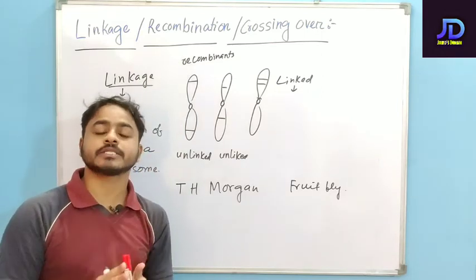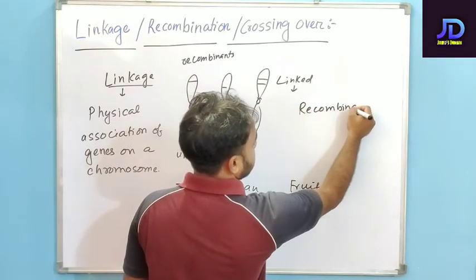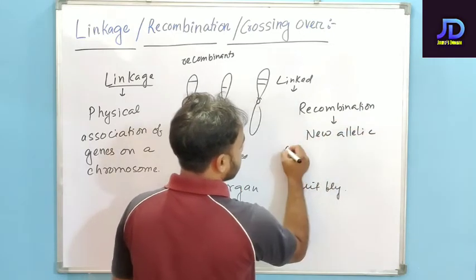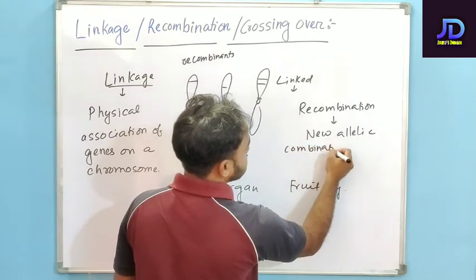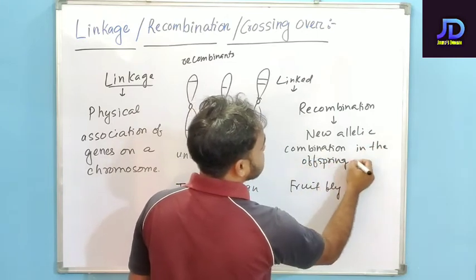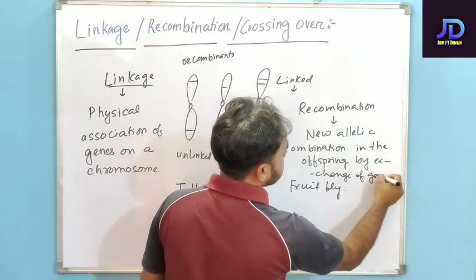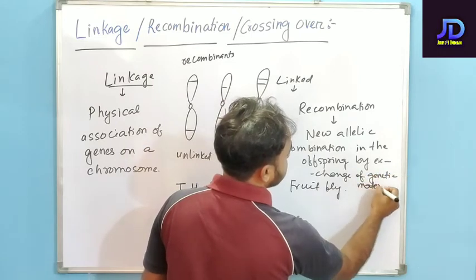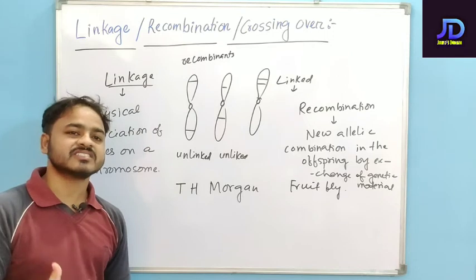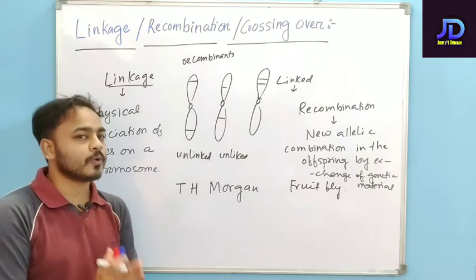Recombination is the process of formation of new allelic combinations in the offspring by exchange of genetic material. Recombination will take place when the genes are not linked — when the genes are unlinked, that means genes are located far apart.